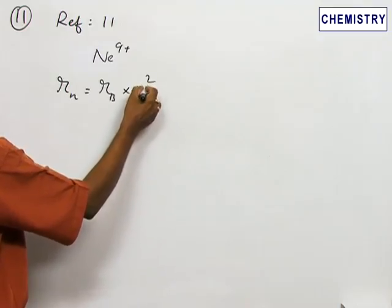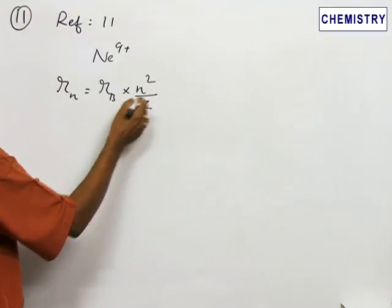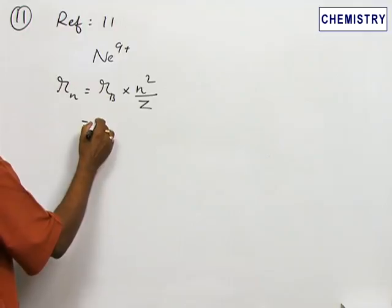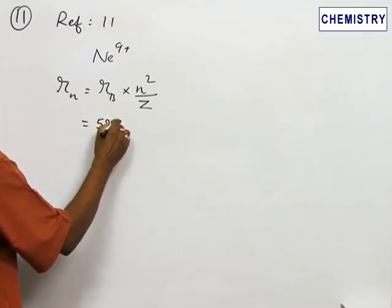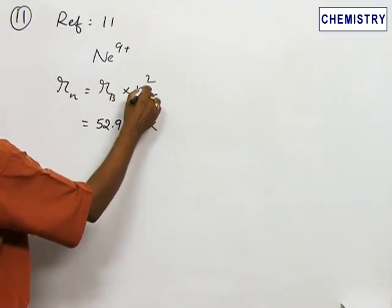n² is the orbit number and z is the nuclear charge. Substitute the values: Bohr's radius is 52.9 picometers, multiplied by n².